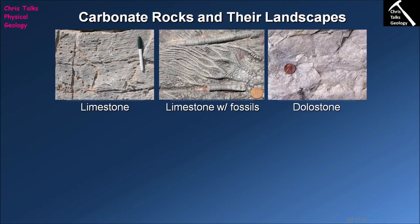During the lithification of our carbonate-rich sediment, it will on occasion come into contact with a magnesium-bearing water. The reaction between this magnesium-bearing water and the calcium carbonate sediment can lead to the formation of the mineral dolomite — that's calcium magnesium carbonate. The alteration of our limestone by this magnesium-bearing fluid gives rise to another type of carbonate rock which we refer to as a dolostone.